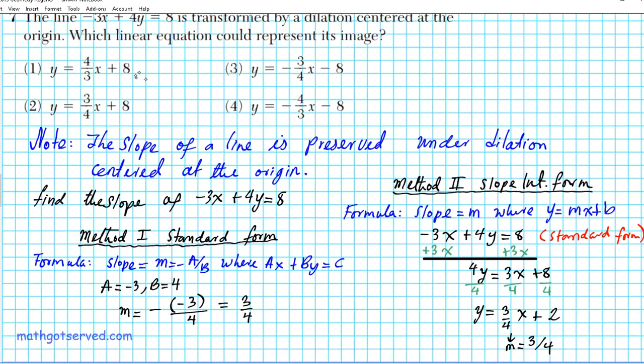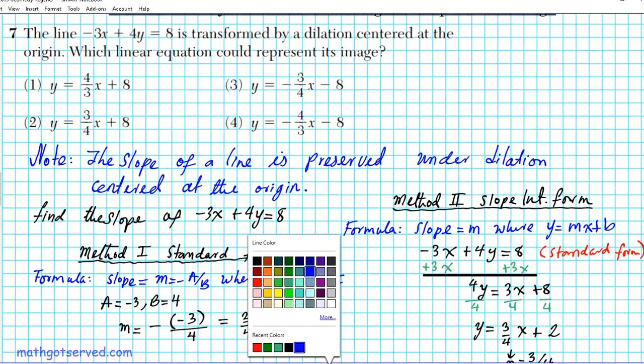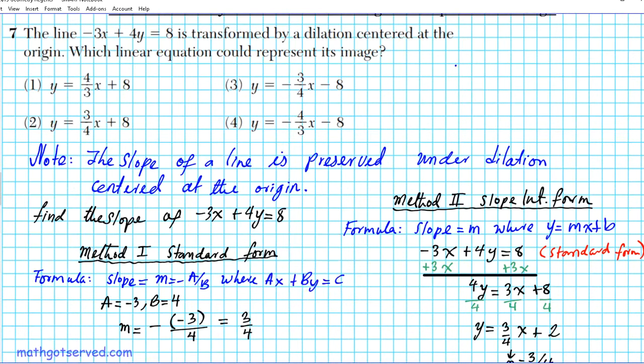The slope is 3 over 4, so the line that could represent the transformation by dilation centered at the origin is the line that has a slope of 3 fourths. We have to find the slope of each of these lines. They're already in slope intercept form, so we're looking at the coefficient of x.